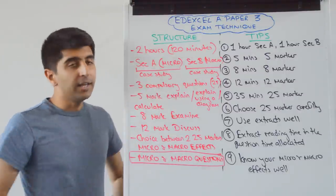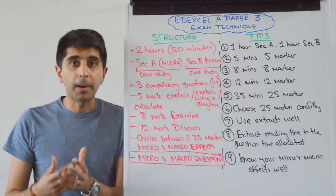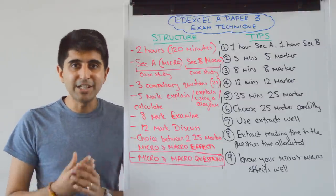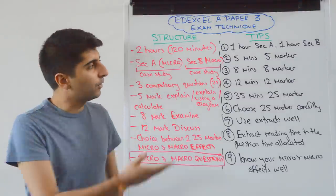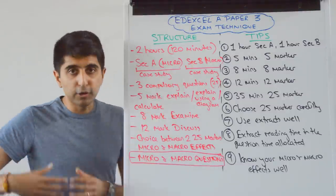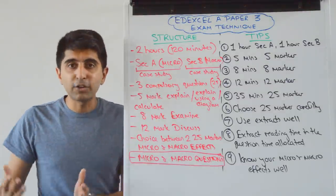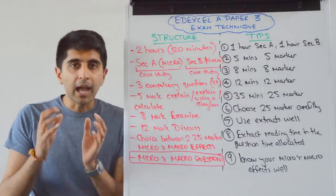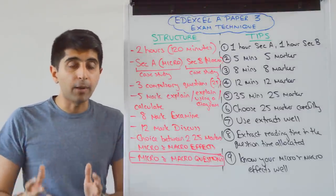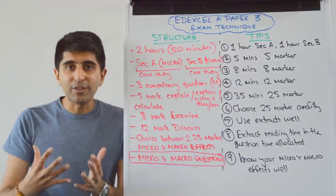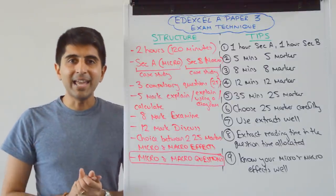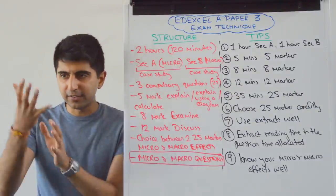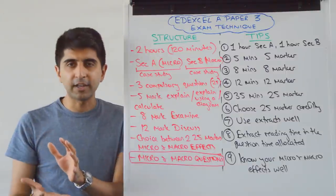It's going to look like a given section is tailored towards micro or macro. For example, Section A might look like it's focused around micro because it's about the energy industry in the UK. Section B might look like it's macro because it's focused on the macro performance of a given country. The extracts might give you that hint that this is a micro-focused section and this is a macro-focused section.